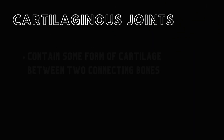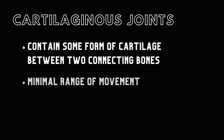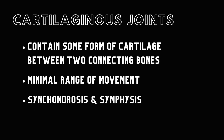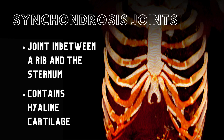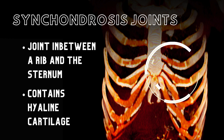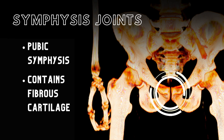Cartilaginous joints contain some form of cartilage between two connecting bones. These types of joints have minimal range of movement and encompass two types: synchondrosis and symphysis. Synchondrosis joints, such as the joint between a rib and the sternum, contain hyaline cartilage. The pubic symphysis is a great example of a symphysis joint where fibrous cartilage connects two bones.